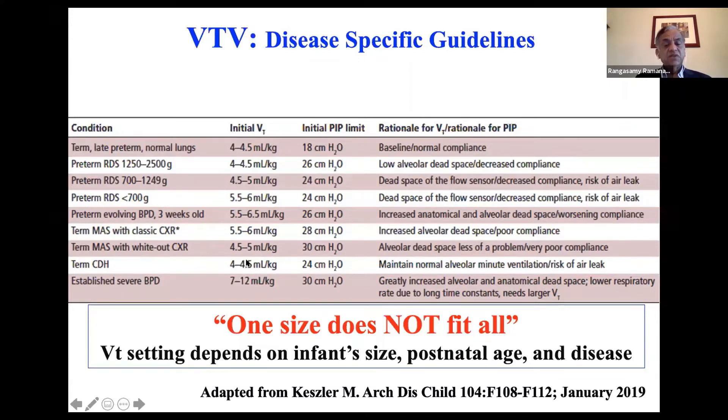For CDH, as we discussed, you don't want the PIP to be more than 24. And for severe BPD, the approach is quite different.